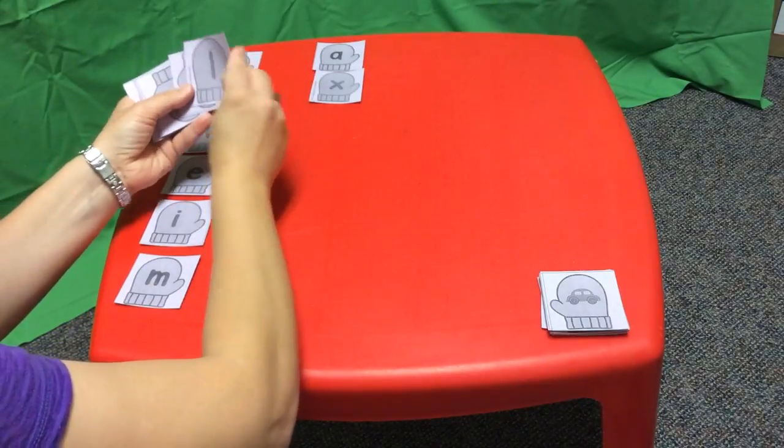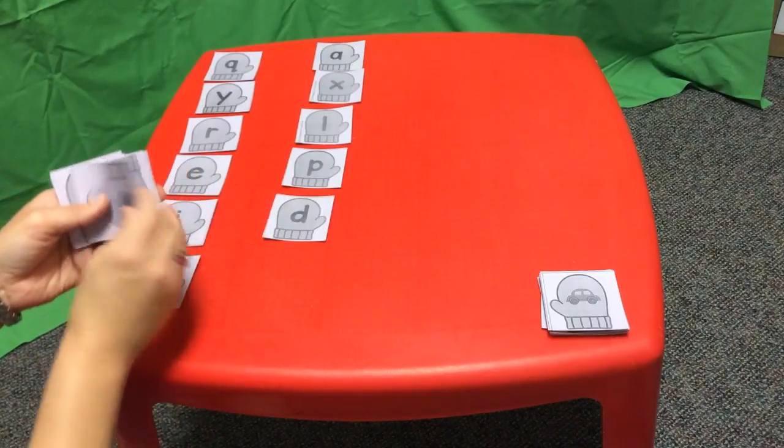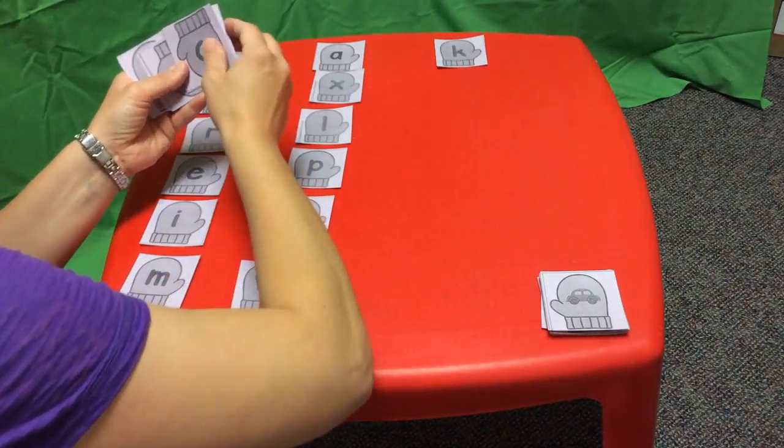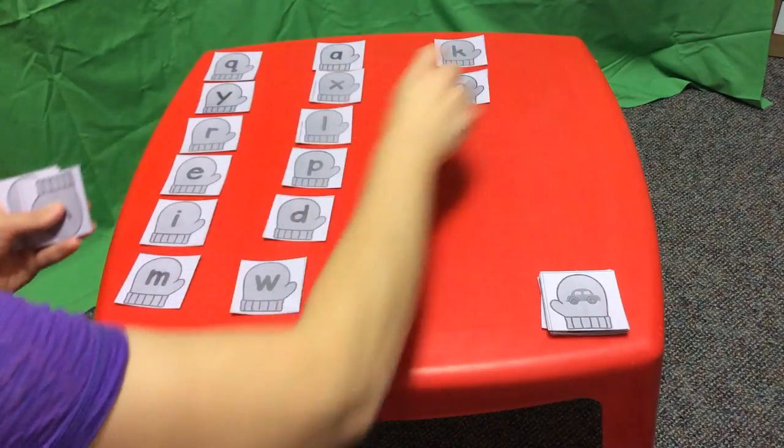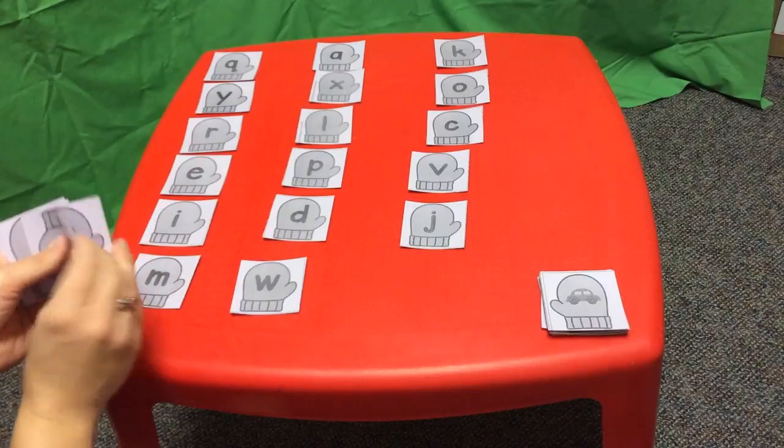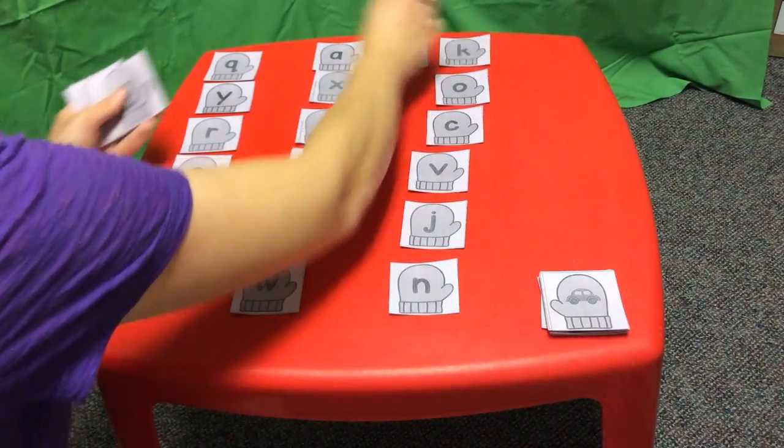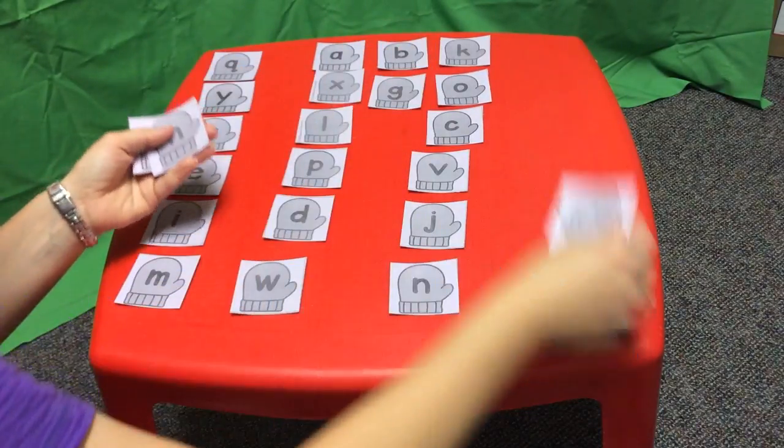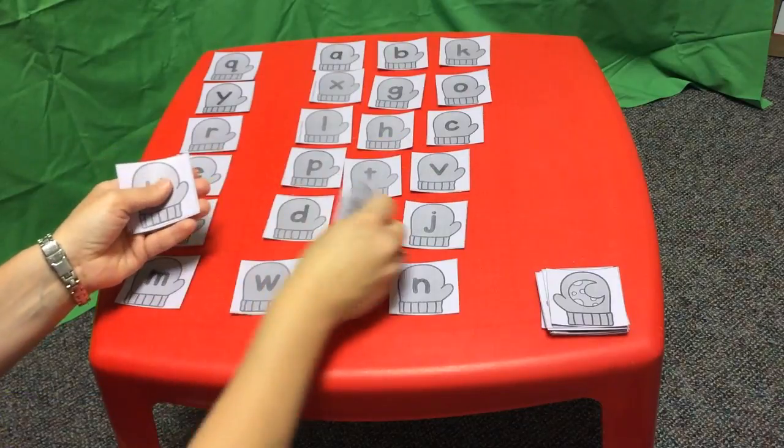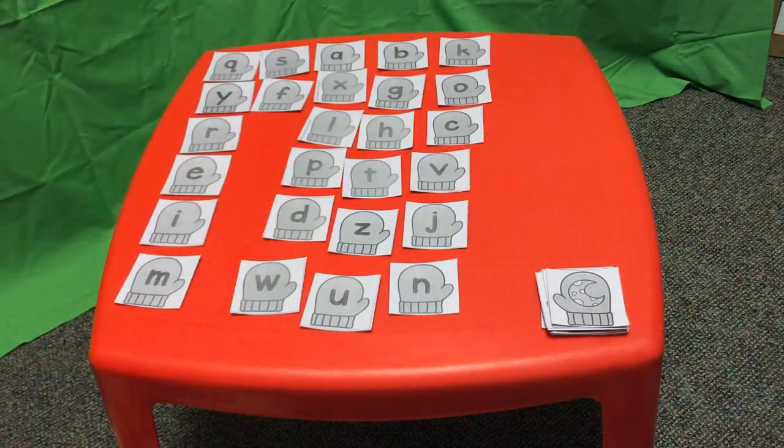You're going to keep laying them out until you have them all, and of course make sure that the mittens are going the right way, otherwise your letters will be upside down. You're going to make sure you put them all out, and they just keep going. So I'm going to put them here. Hope I didn't miss one. I better put the picture in there. Now put all my letters out.